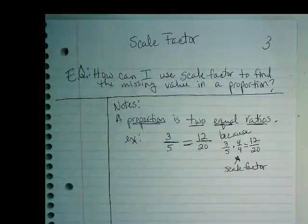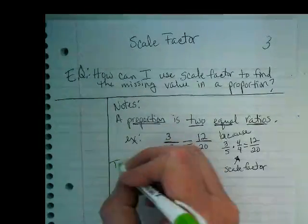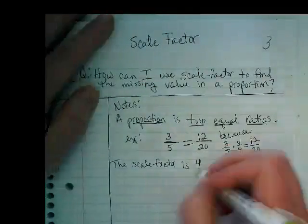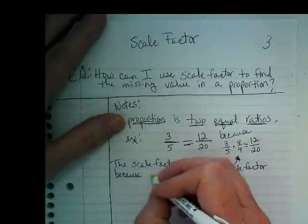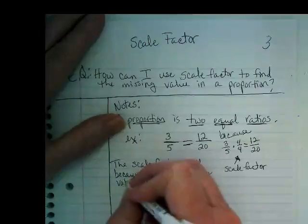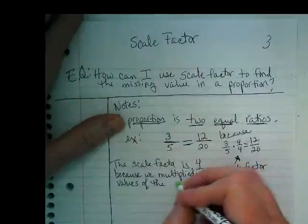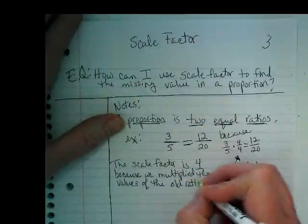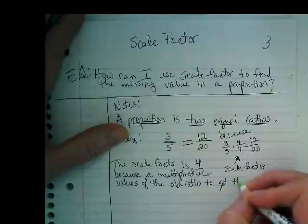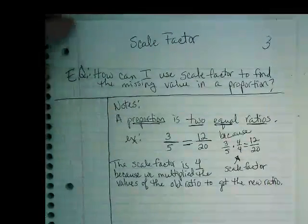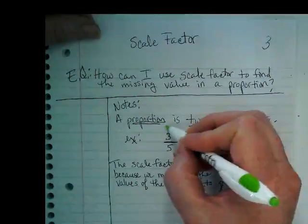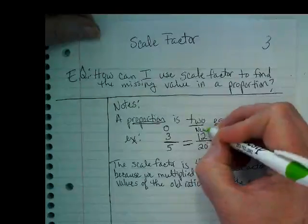What did I multiply by? 4. So, we're going to write a little statement here. The scale factor is 4 because we multiplied the values of the old ratio, or the original ratio, to get the new ratio. And I'm going to go back up to my proportion and I'm going to label this. This is what we call the old or the original, and this one is the new. It's the changed one.